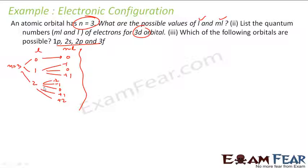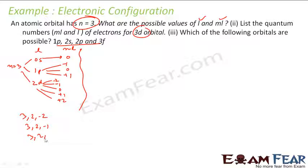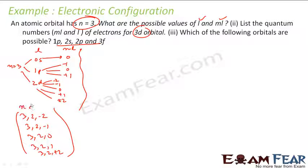This gives us the s, p, and d orbitals. So for 3d, I have to list all the quantum numbers. For 3d the quantum numbers are: (3, 2, −2), (3, 2, −1), (3, 2, 0), (3, 2, +1), and (3, 2, +2) — where the first number is n, second is l, and third is ml.